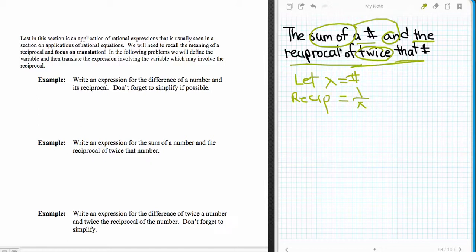Now I can translate. The sum of a number and the reciprocal of twice that number. Twice that number is equal to 2x, and the reciprocal of twice that number is 1 over 2x.